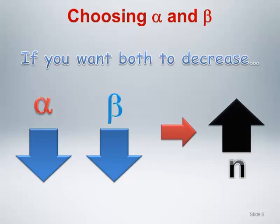In practice, most randomized trials use values of 0.05 for alpha and 0.2 for beta. Recall that power is 1 minus beta, here equal to 0.8 or 80%.